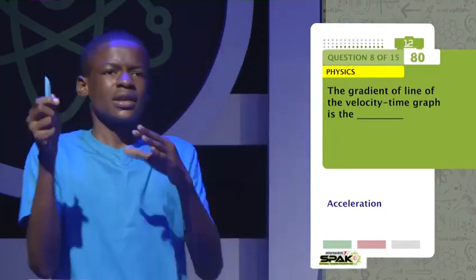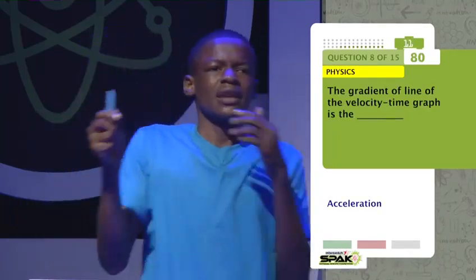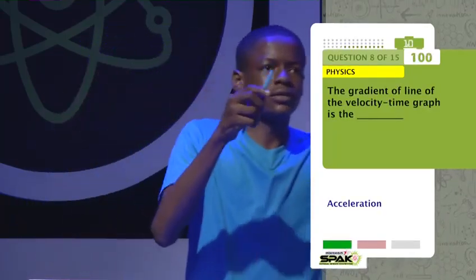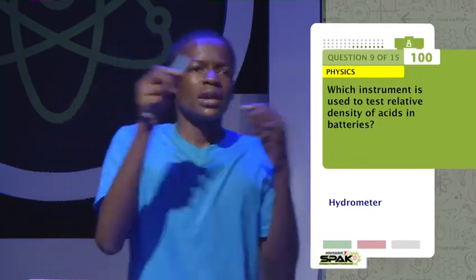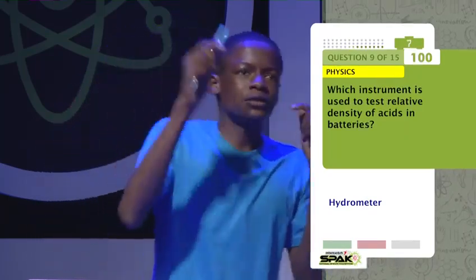The gradient of the line of the velocity-time graph is the? Acceleration. Which instrument is used to test the relative density of acids? Hydrometer.